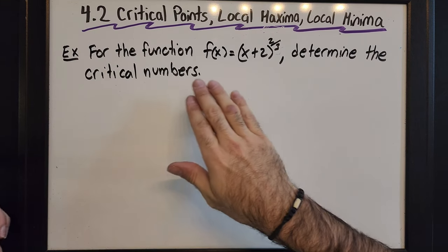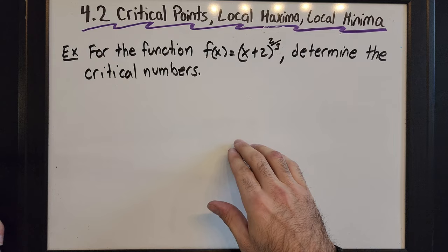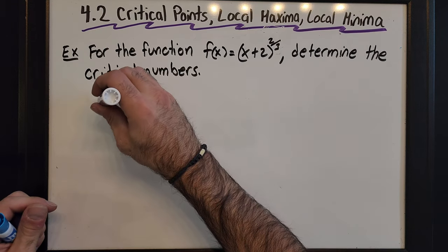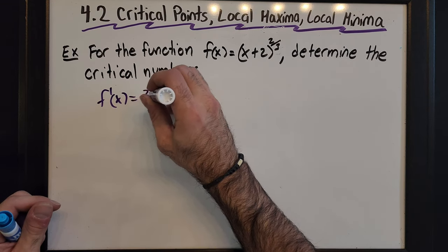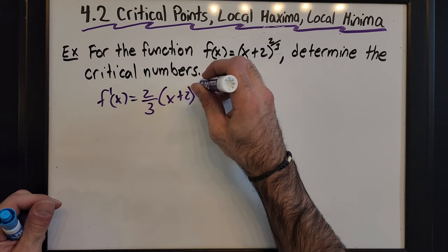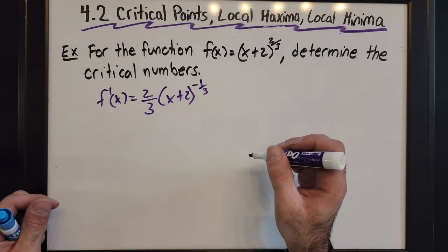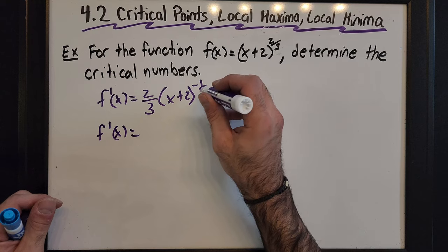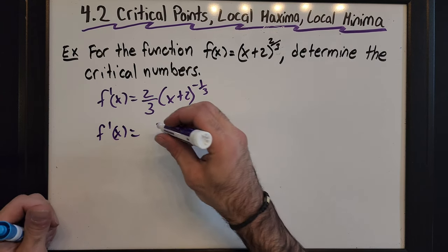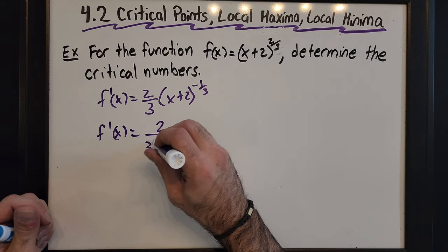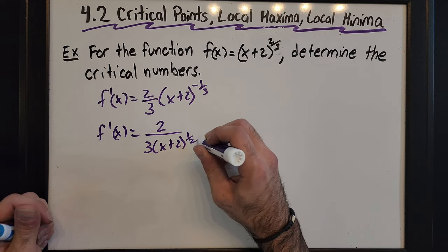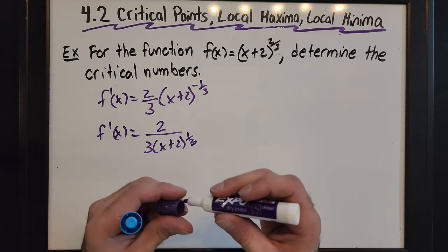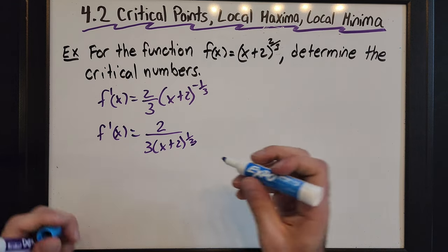There will be more difficult problems with cusps in the next example. For the function f(x) = (x+2)^(2/3), we want to determine the critical numbers. We always start by finding the first derivative. Using the chain rule, this gives us (2/3)(x+2)^(-1/3) times the derivative of the inside, which is 1. Rewriting without the negative exponent, this becomes 2 over 3(x+2)^(1/3).